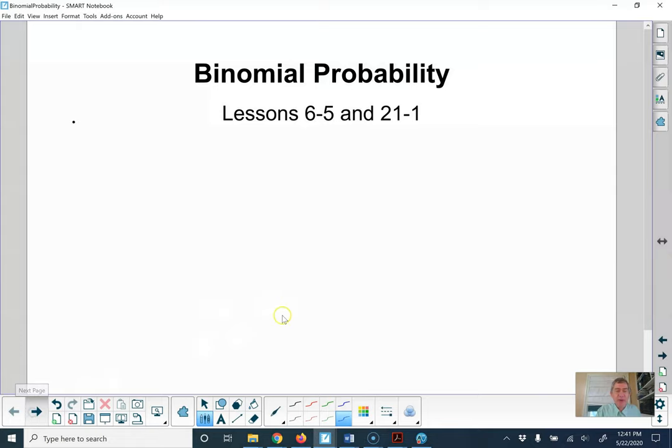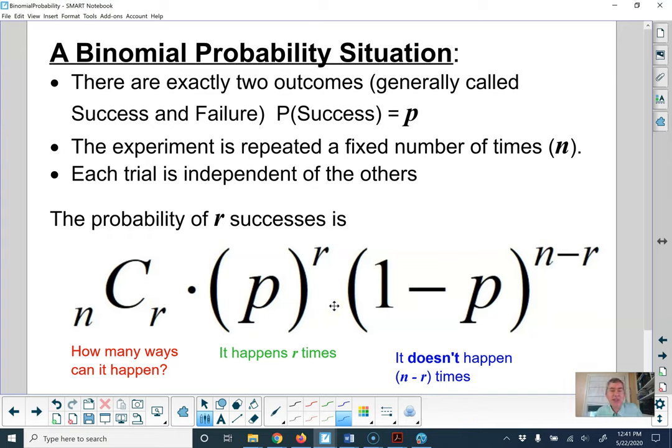First off, you have to have a binomial situation. And so what it looks like, there are exactly two outcomes. You usually call them success and failure. You shoot a free throw, either it goes in or it doesn't. You flip a coin, either it's heads or it's not. You roll a die, either it's a five or it's not. So only two possibilities.